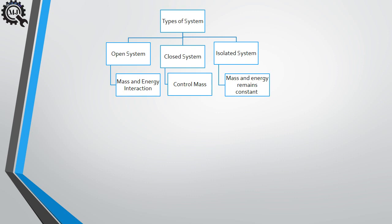Let's take an example of an open system. If we take a container in which water is kept and we provide heat to that container, when the water reaches its boiling point it will start converting into steam. Since we have not covered the container, all the water transfers to the surrounding in the form of steam. Both energy transfer and mass transfer take place, which is why this is an open system.